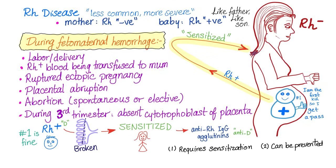After the first pregnancy, during labor and delivery, some RH positive blood from the baby will enter mommy's blood. Mommy becomes sensitized — she was previously unsensitized. Now mommy is producing anti-RH positive agglutinins. Since this is the first baby, he gets a pass — he is completely normal. Mommy doesn't have time to produce sufficient antibodies to damage the baby during the first pregnancy, so the first newborn is fine.